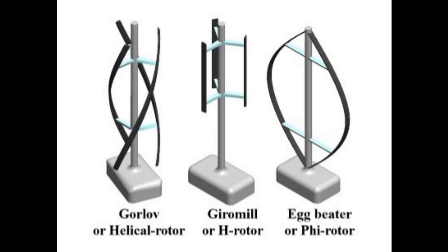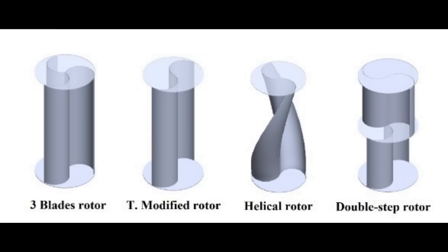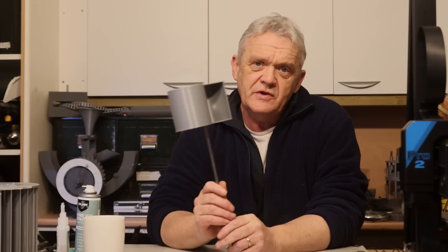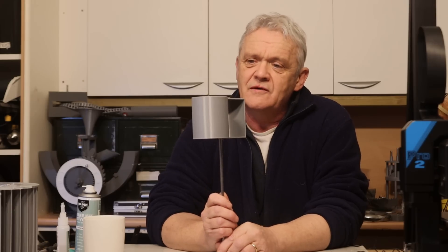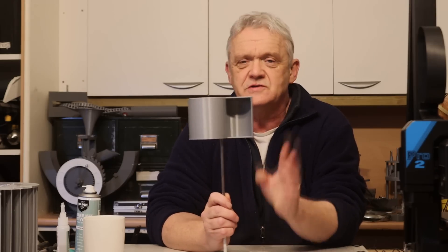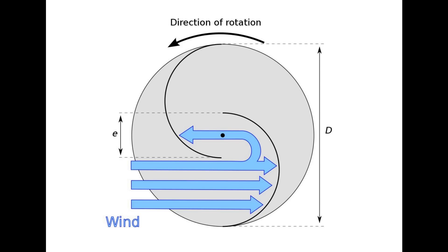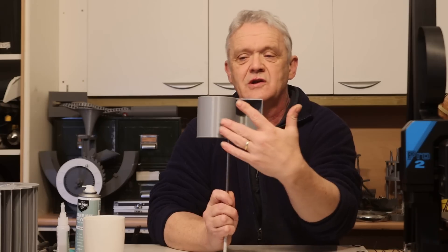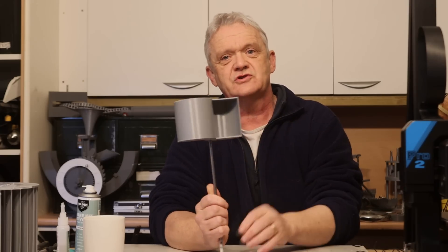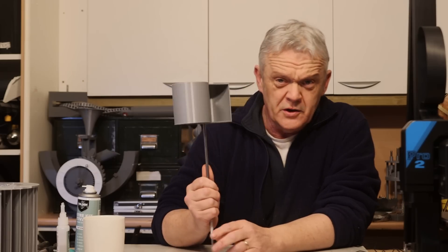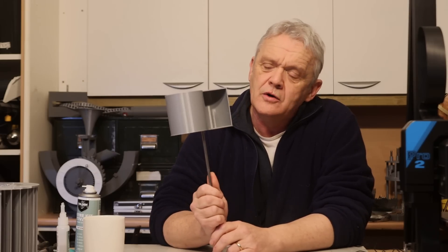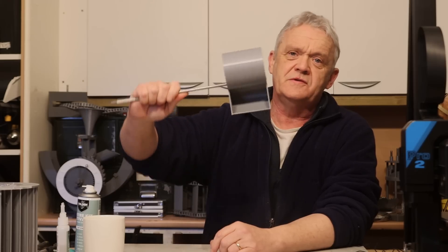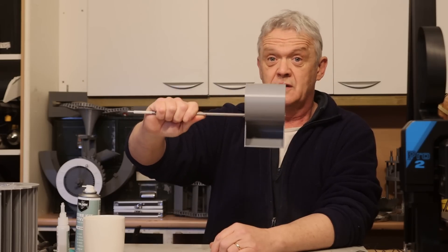For Darrieus types there are only three, and for the Savonius types there are essentially four. What you normally see with a vertical axis wind turbine is a Savonius type, which is just two scoops and works by differential drag. The wind blows in, turns it, and there's less drag on the other surface, so it always turns in that direction.